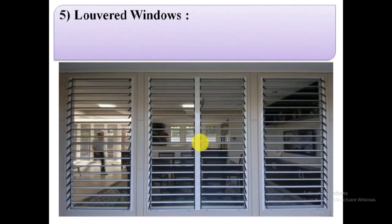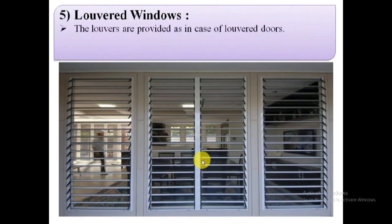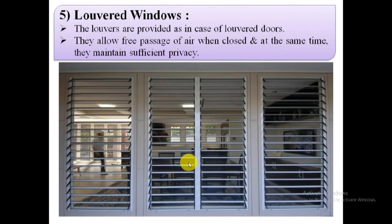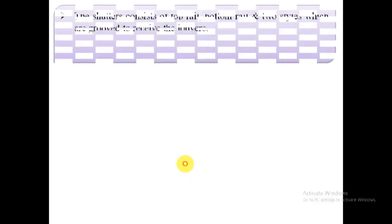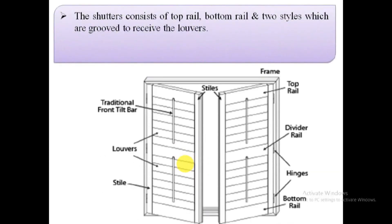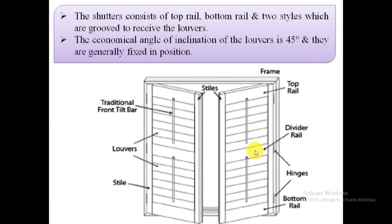5. Louvered windows. The shutter consists of top and bottom rails and two styles which are grooved to receive the louvers. They are similar to louvered doors. They are provided to ventilate the inside of the room, to provide permanent ventilation, permanent lighting, and to allow seeing outside. For working well, the economical angle of inclination of louvers is 45°. Louvers slope downwards to the outside to run off the rain water.